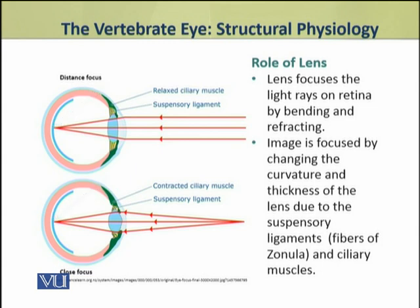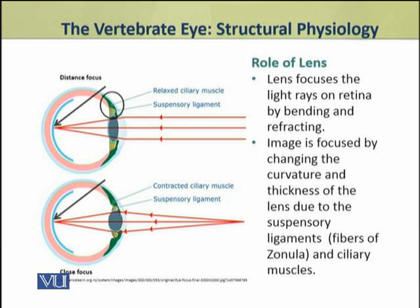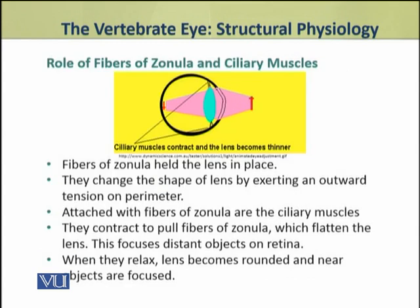To focus light rays on the retina, light rays are bent and reflected, and finally the image is focused. To perform this focusing, the lens plays an important role — its curvature and thickness are changed. This change happens because of the suspensory ligaments, known as fibers of zonula, and the ciliary muscles attached to them. These increase or decrease the curvature and thickness of the lens, and as a result focus light rays on the retina.